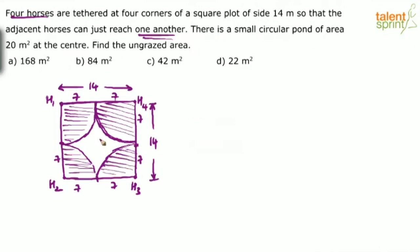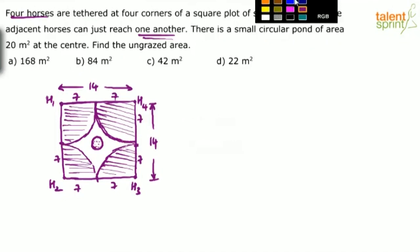Now also at the center, there is a pond. There's a water pond where the area is 20 meters square. What is the ungrazed area? Ungrazed area is what here? This green region. Find out how do you find out the green region? It's very simple.